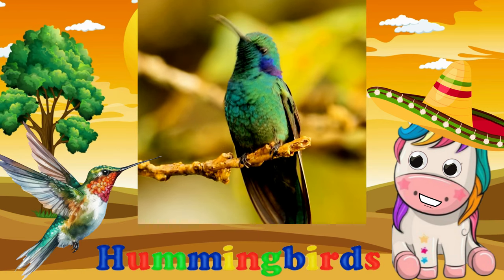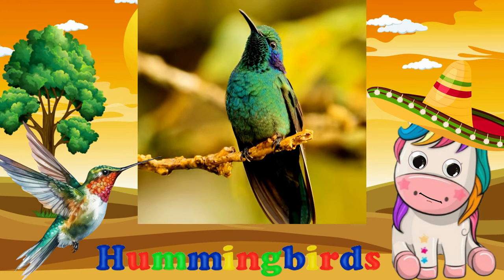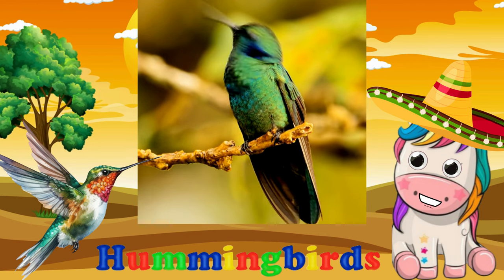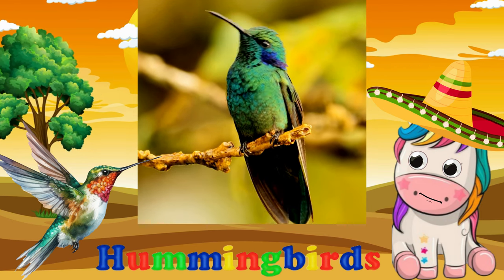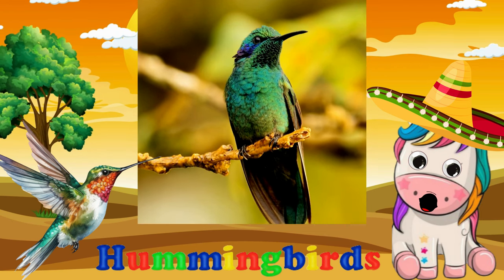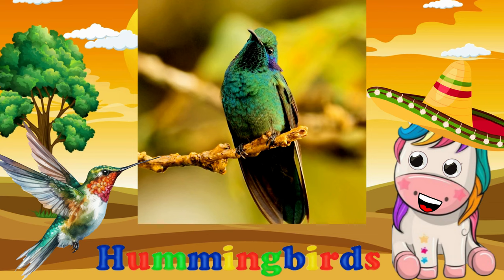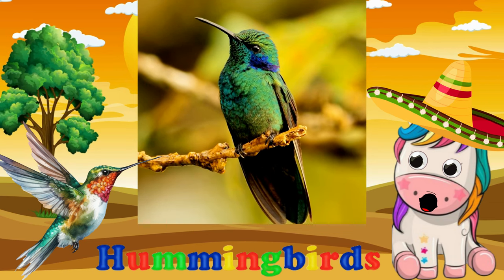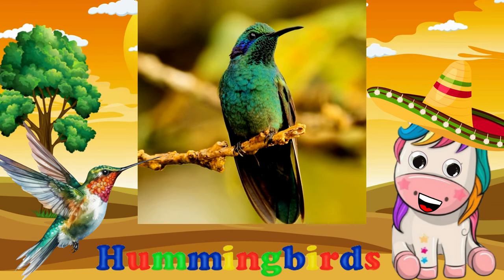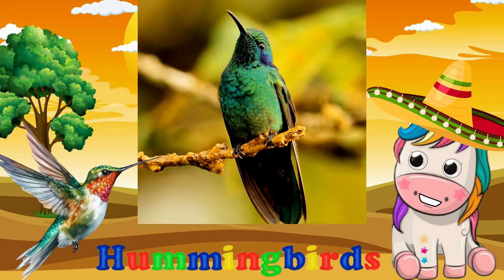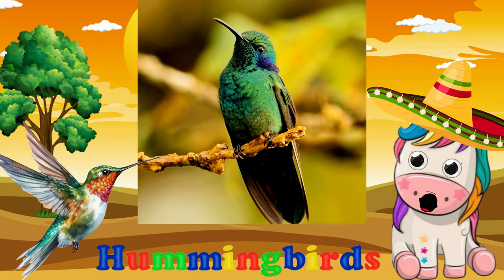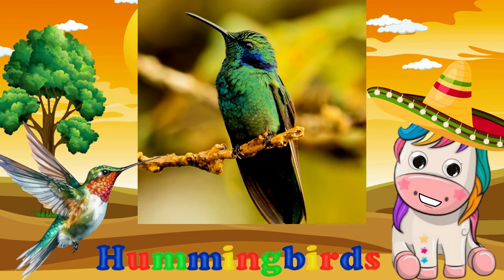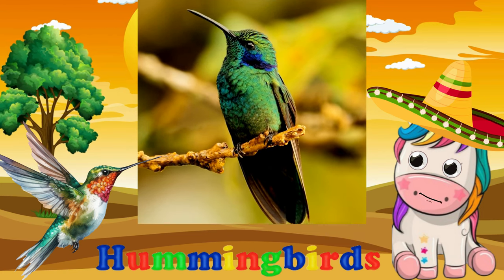Hummingbirds are birds native to the Americas and comprise the biological family Trochilidae. With about 366 species and 113 genera, they occur from Alaska to Tierra del Fuego, but most species are found in Central and South America.